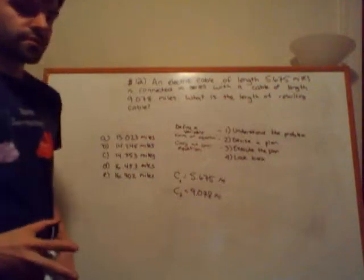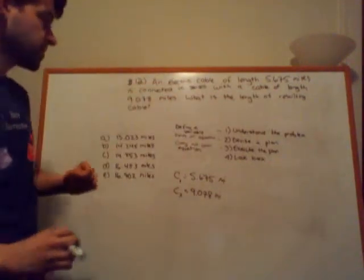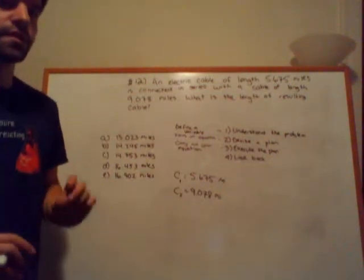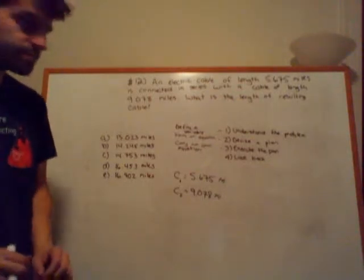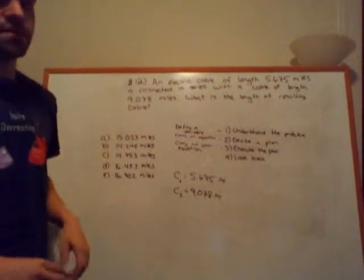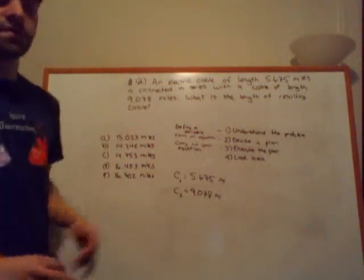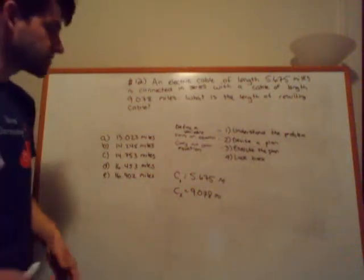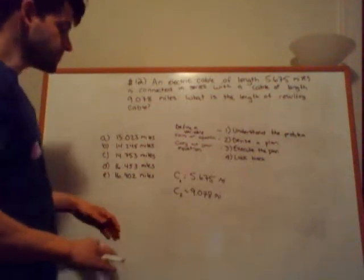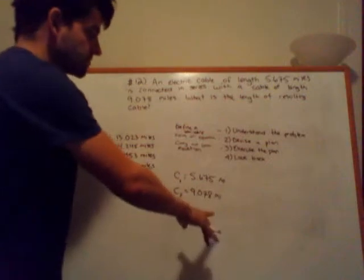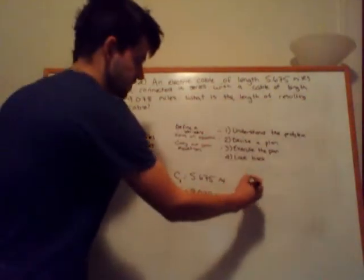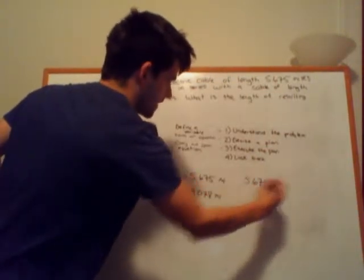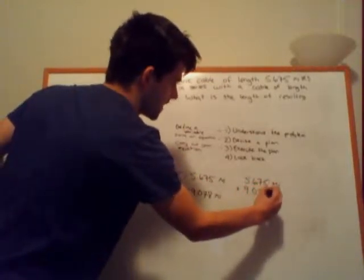Now, as you're reading these verbal expressions and story problems, you're going to notice that there are key words that indicate how you can form your mathematical equation. One of those first words that I want to introduce to you is connected. Connected usually means or will mean the sum of something. You are taking two things and putting them together. So you're taking the mathematical sum of the two. What is the length of the resulting cable? So since we're going to be taking a mathematical sum here, we'll take 5.675 miles and add 9.078 miles.